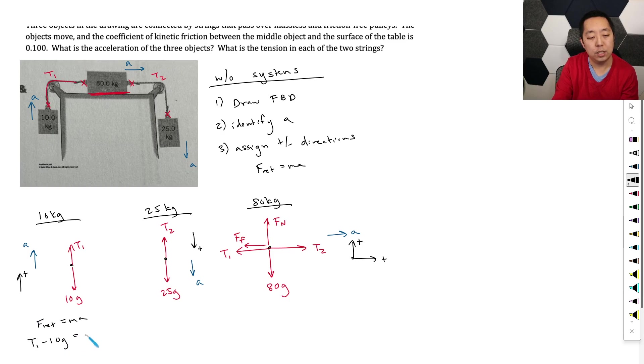So F net equals ma. We're going to add the forces on the free body diagram. T1 minus 10g is equal to 10 times the acceleration. This one, when I do F net equals ma, I do down as positive, so this is 25g minus T2 is equal to 25a. Remember the ma, the m in your ma is the mass of the free body diagram. This one, you have two, you have x and y. So the x direction has the actual acceleration. So that would be T2 to the right, force of friction to the left, T1 to the left, that equals 80 times a. And in the y direction, FN is up, 80g is down, so that's negative. And then there's no vertical acceleration because acceleration is only to the right. There's no up or down acceleration. This is going to equal zero.